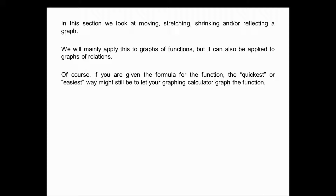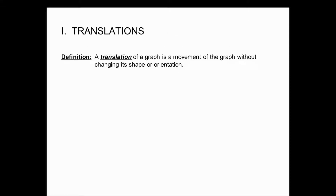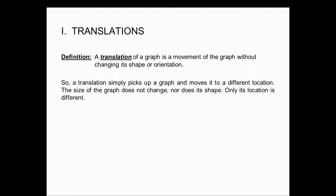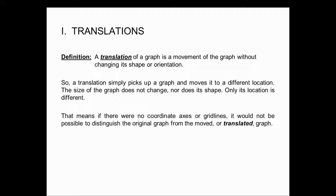Some people are really big on transformations and translations — I'm not that big on it. Definition: A translation of a graph is a movement of the graph without changing its shape or orientation. A translation simply picks up a graph and moves it to a different location. The size and shape do not change; only its location is different. A translation is a special type of transformation. Transformation can really alter how a graph looks; a translation doesn't — it just moves it.